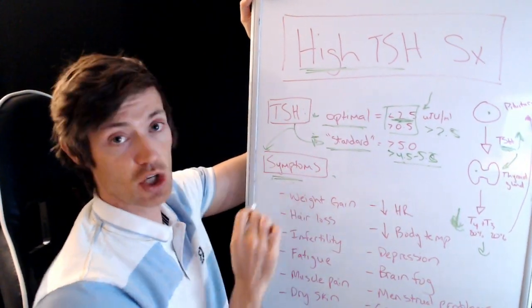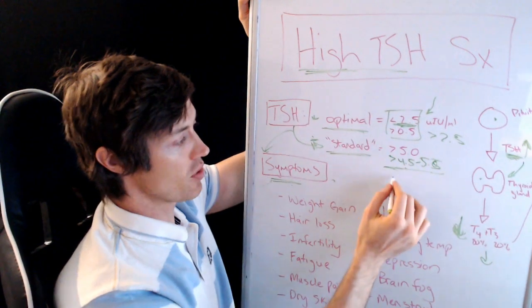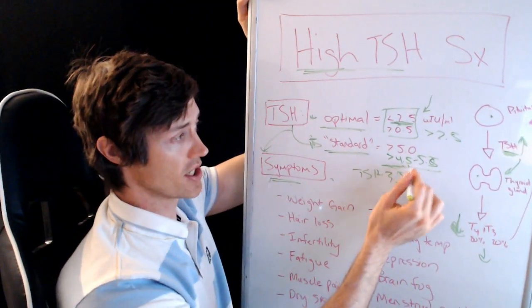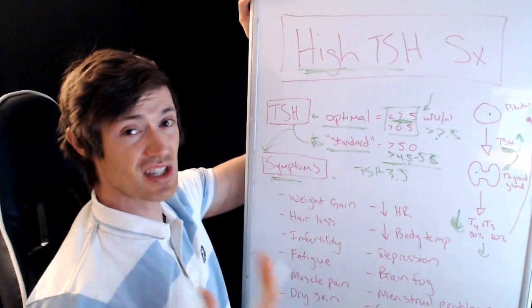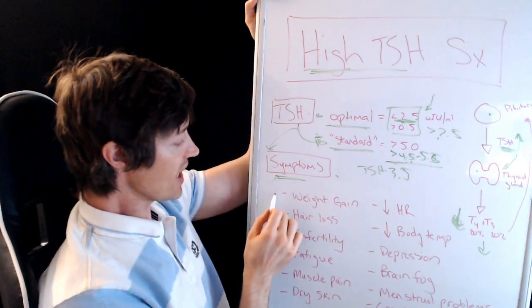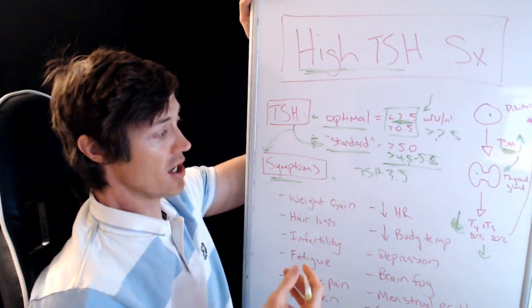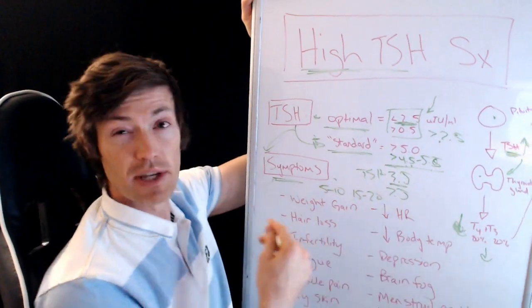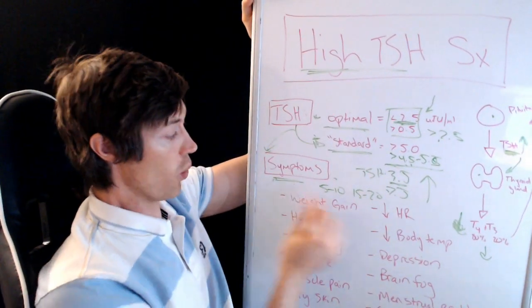Now let's talk about the symptoms you might be experiencing. Your doctor may tell you your thyroid is fine even at a TSH of 3.5, because they're going by the standard range — but by my range, you are a little bit off. These are the symptoms of hypothyroidism — hypo means low, so low thyroid. Weight gain is one: it can be a little or a lot depending on thyroid function. A TSH of 3.5 may cause 5 to 10 pounds of weight gain, but a TSH of 7.5 might cause 15 to 20. The worse your TSH, the more severe these symptoms.